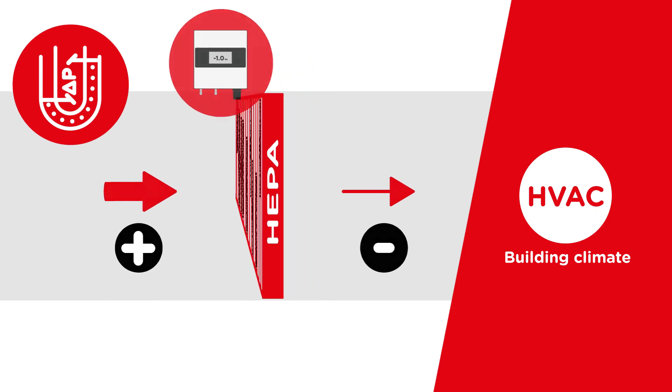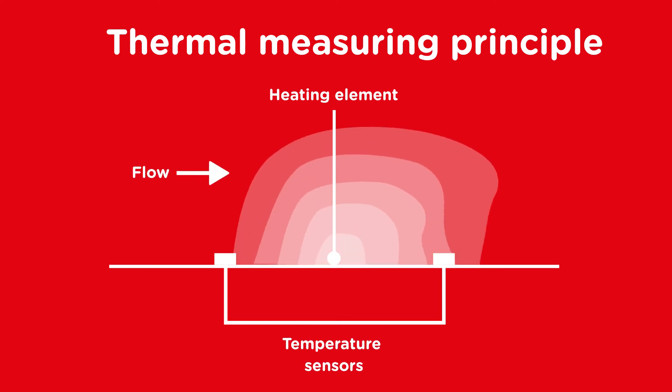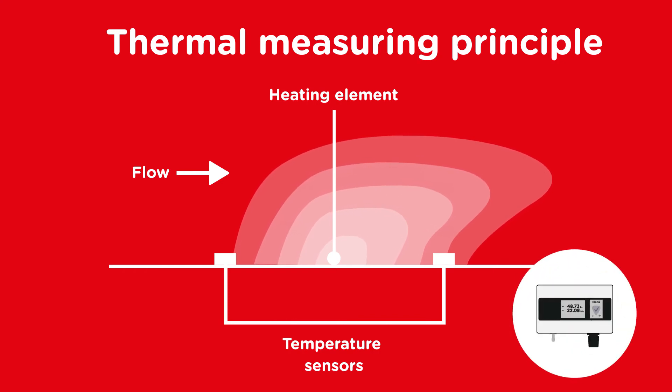There are two main principles for measuring differential pressure. In the thermal mass flow principle, two temperature sensors are used. The airflow affects the temperature profile, which is detected by the sensors and evaluated by the electronics. This effect is measured and evaluated.